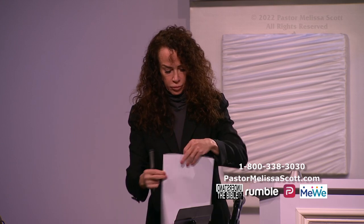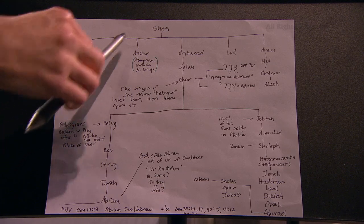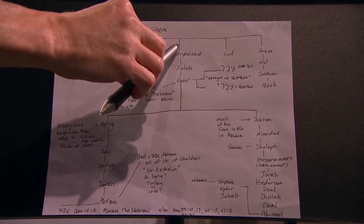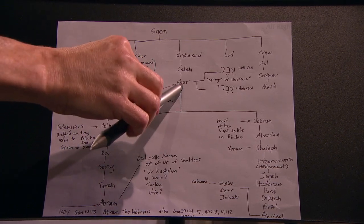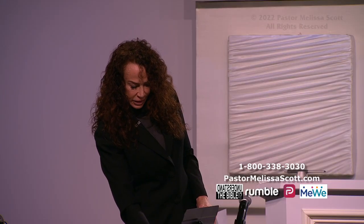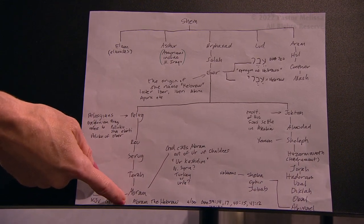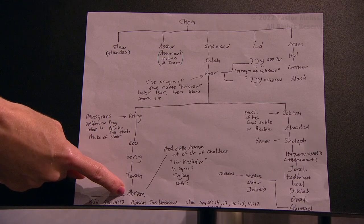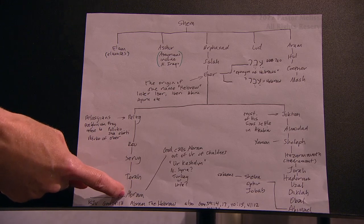In this line you've got the sons of Shem: Elam, which became the Elamites; Asher, which becomes the Assyrians, including the North Iraqis. Going down: Afek, Sad, Selah, Eber. The origin of the name Hebrew — Apiru, Abiru — comes from this name right here. We can see that as we go down this line, which produces Abraham, Abraham indeed will be known as a Hebrew. But we cannot call Abraham a Jew, because there was no such thing then. And we cannot call Abraham an Israelite, as there was no such thing then.